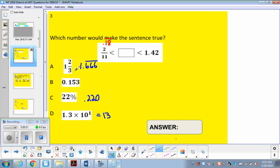Now A is 1 and 2 thirds, and we can see that 1.6 something is going to be bigger than this answer, so A is out. Now B is 0.153, this 0.15 is going to be too small, less than 0.18. Now this 22% as a decimal, you just move the decimal back twice and it makes it 0.22. So 0.22 is the number that's going to be bigger than 0.18 and less than 1.42.